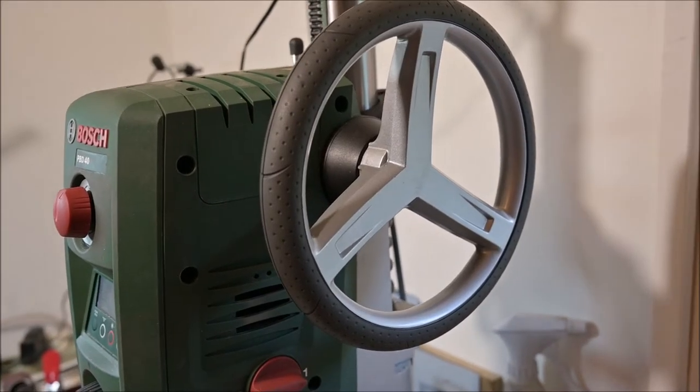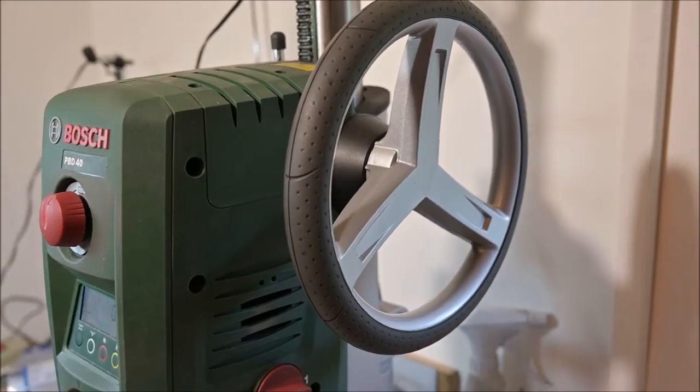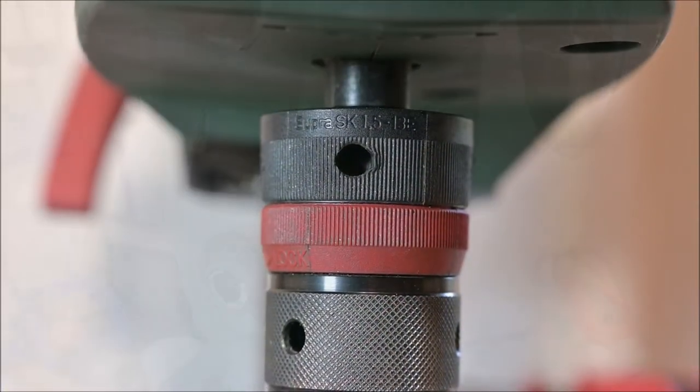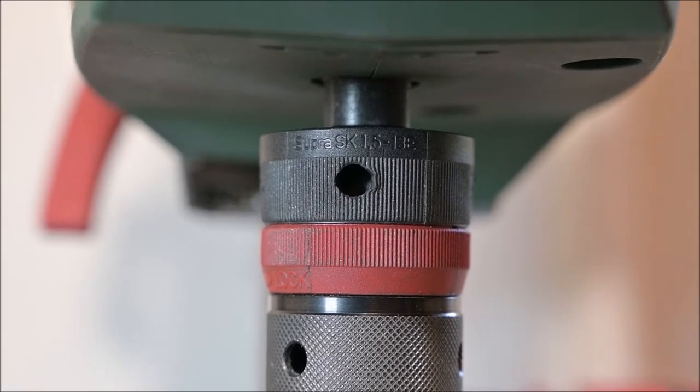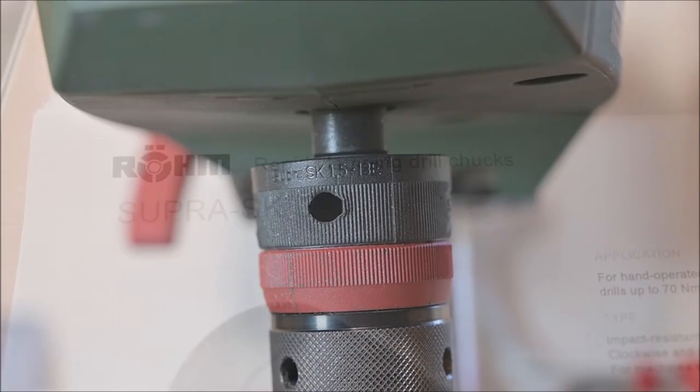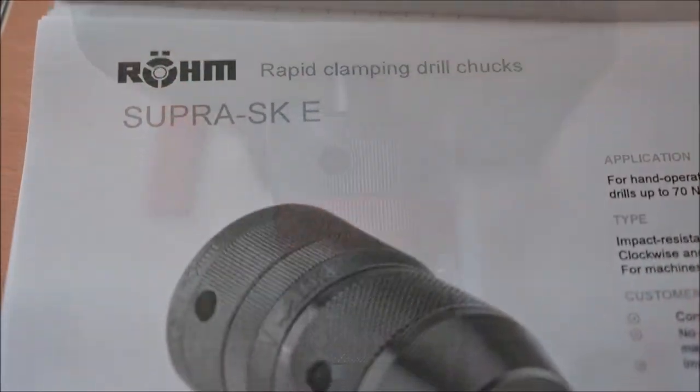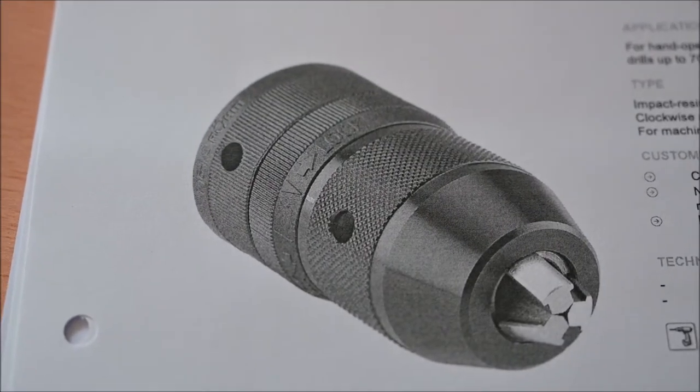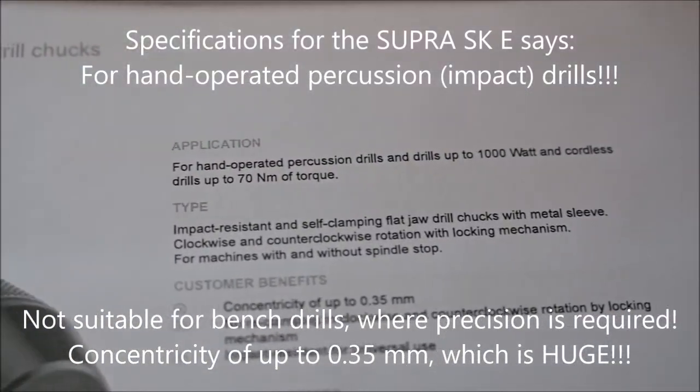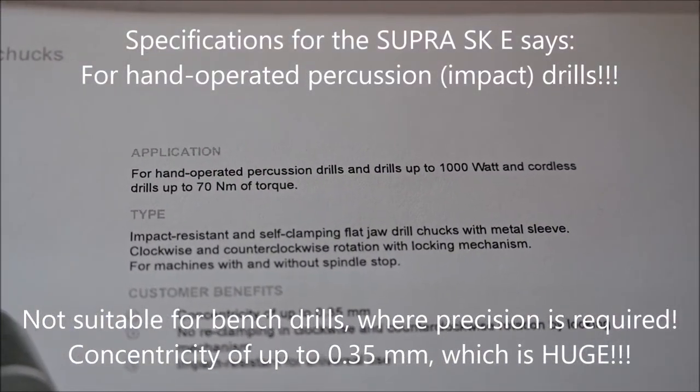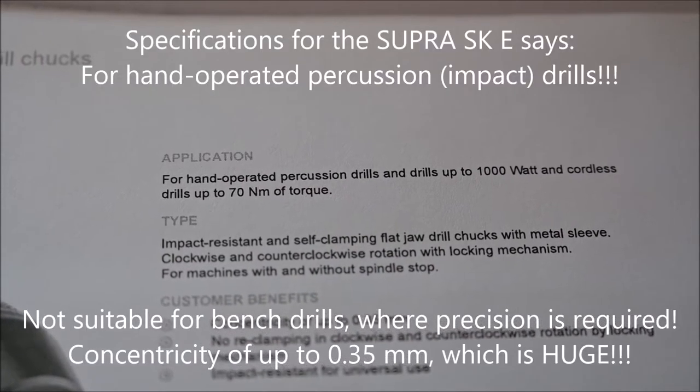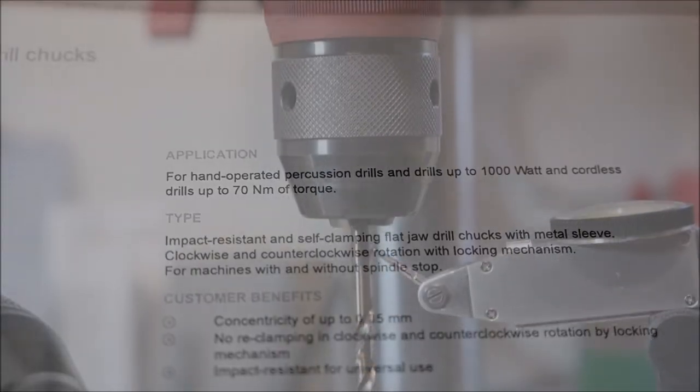The chuck is a completely different thing. It is much more important to me that it is as I want it to be. The original chuck is really low quality. It's Röhm's cheapest, the Supra SK-E type, which is for impact drills, hand drill machines, and not for bench drill machines.